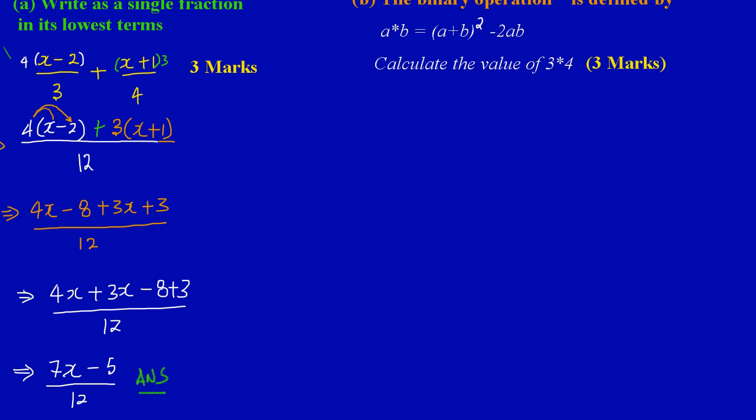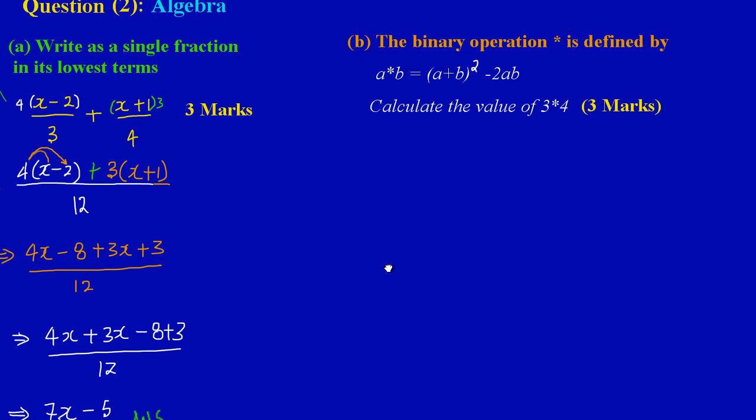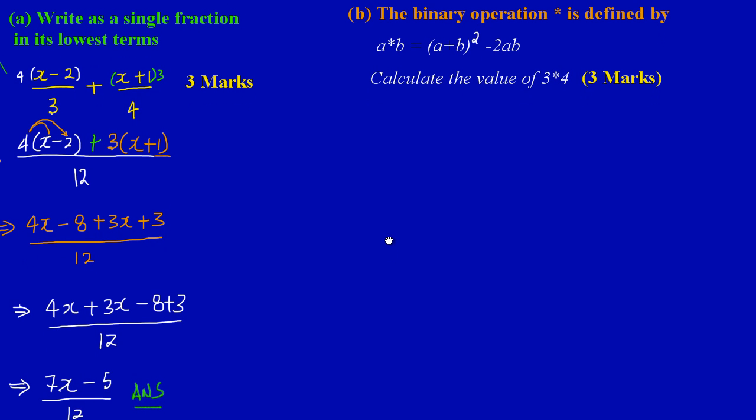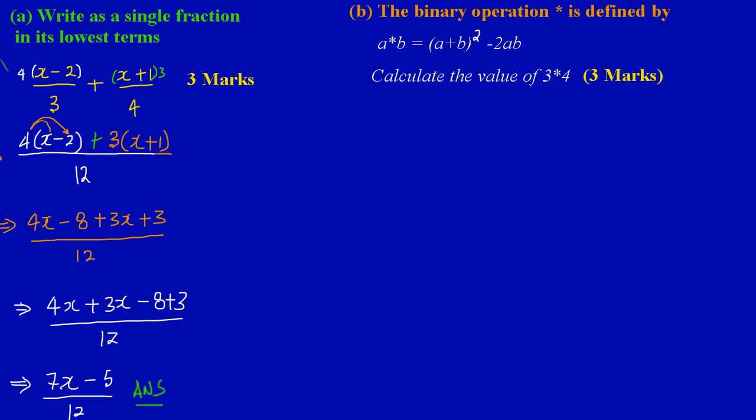Let's scroll down a bit to give us some more space. Here in part B, it's a binary operation. The binary operation star is defined by A star B, which is equal to A plus B all squared minus 2AB. We're asked to calculate the value of 3 star 4. Now this is pretty easy. Notice A star B, and they're asking us to calculate the value of 3 star 4.